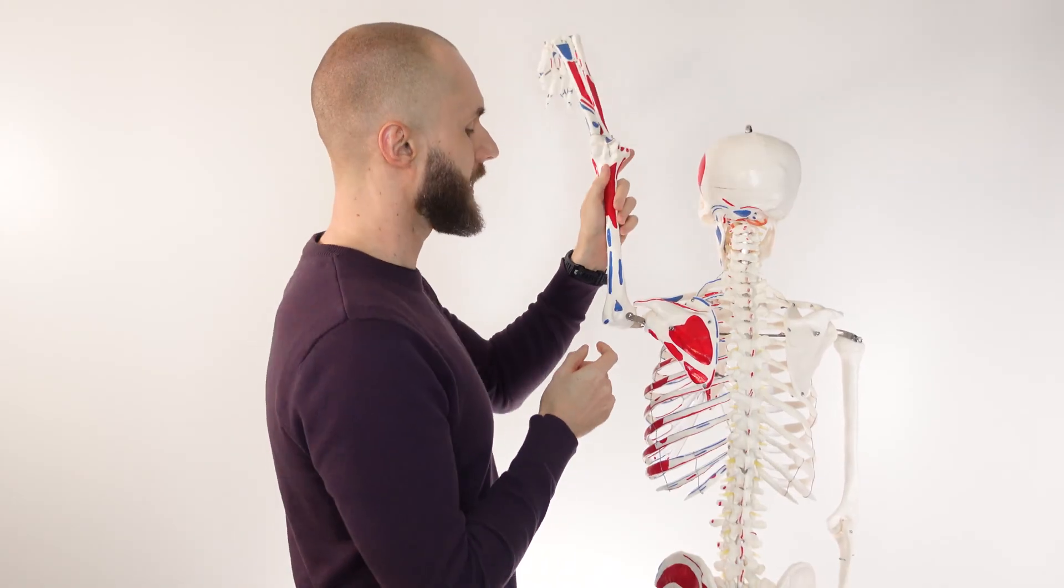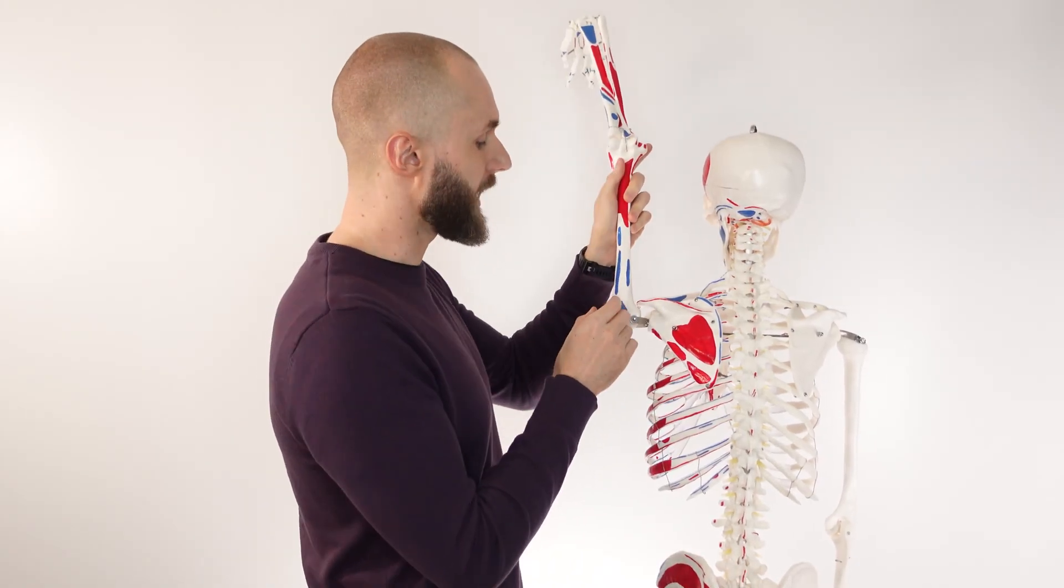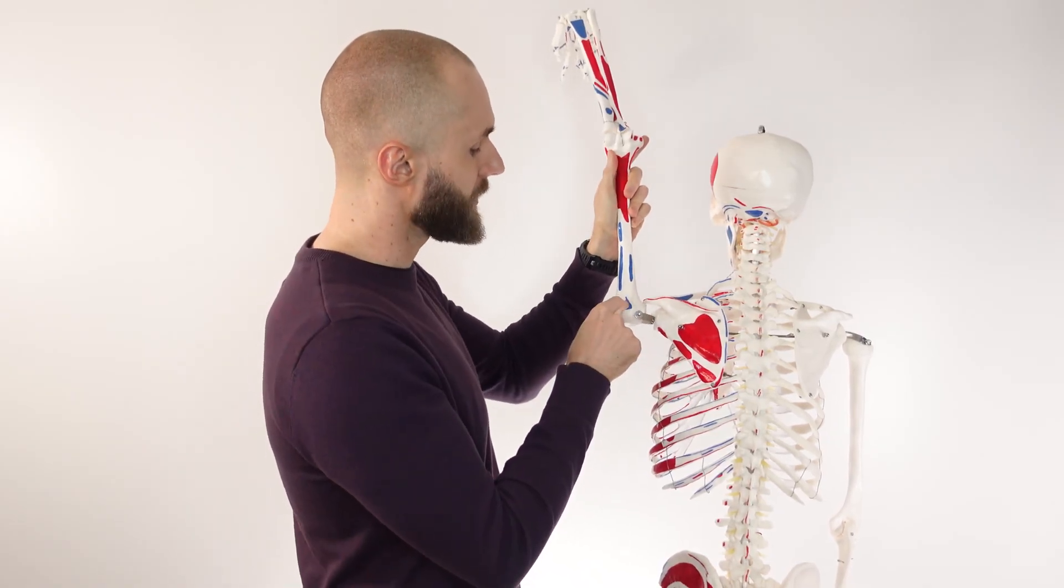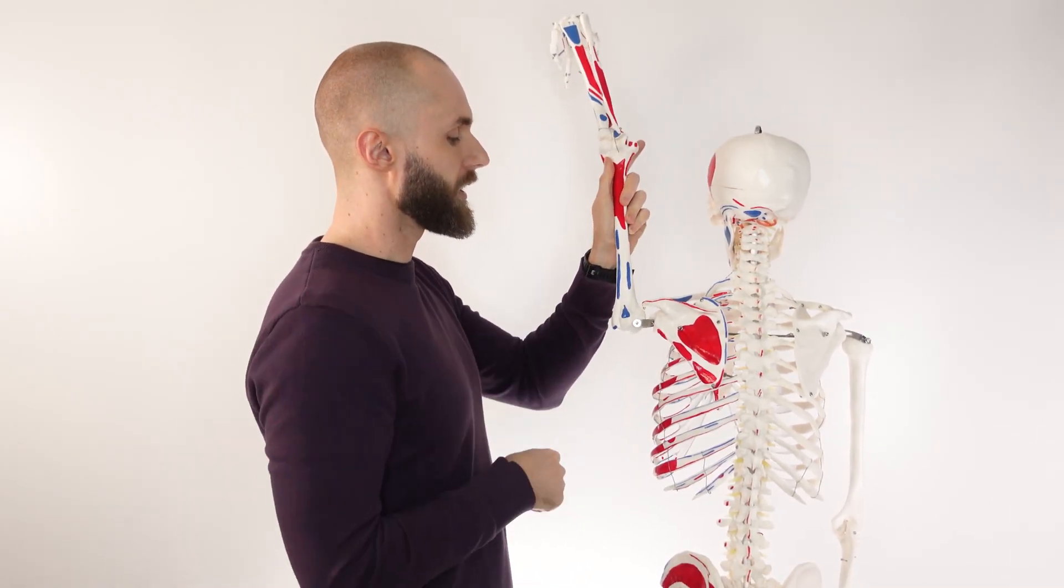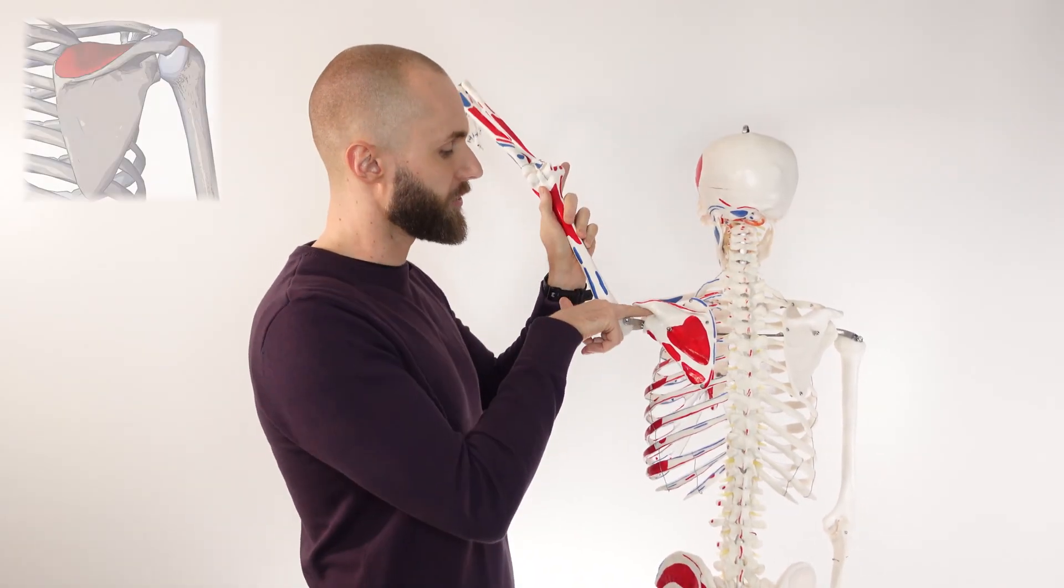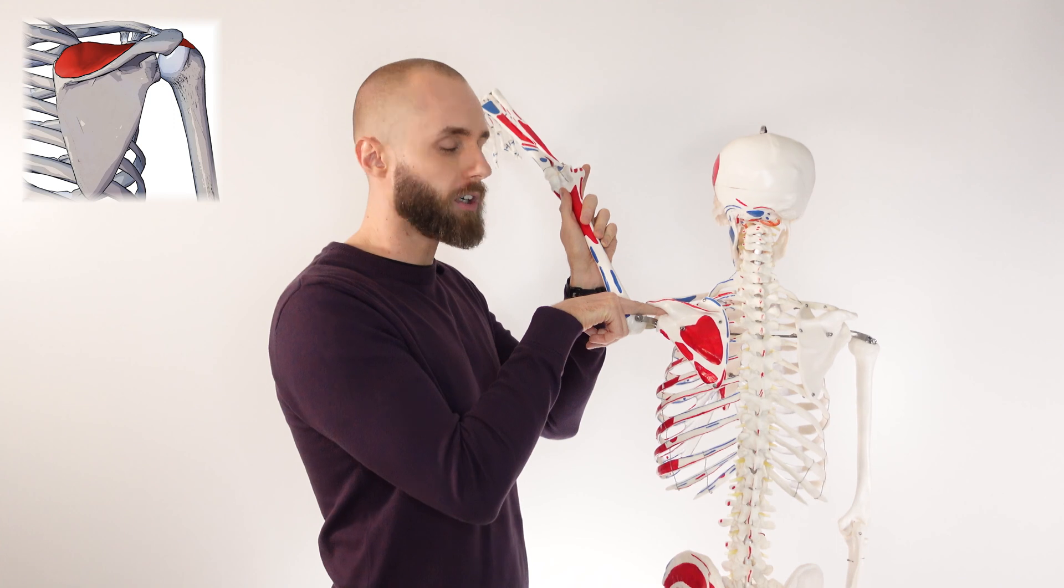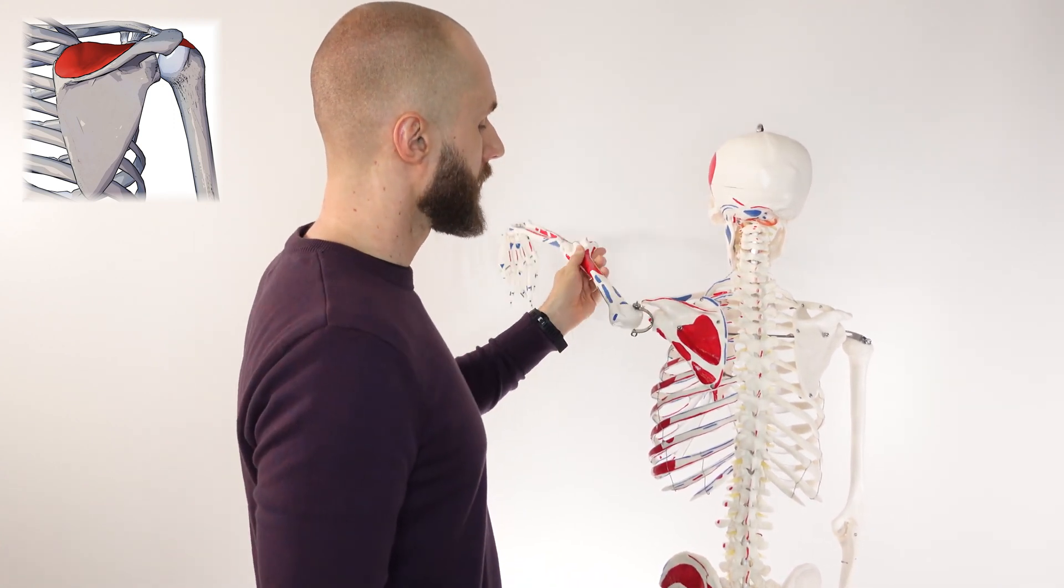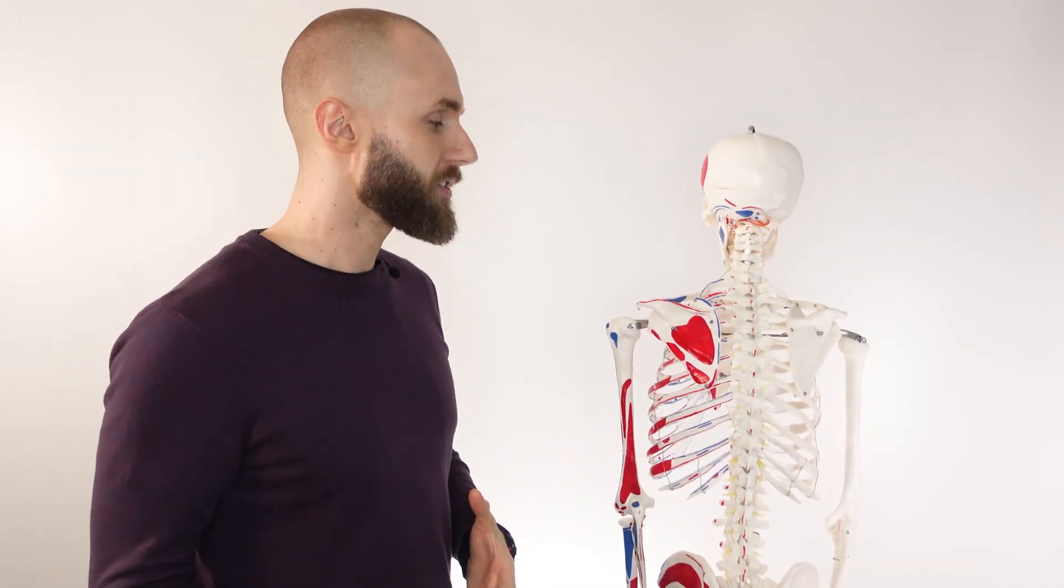The importance of that is because when the arm's up overhead, right now you can see we haven't had that rotation of the scapula and you can see the acromion right here. The humerus is able to bump into it. We've also got the supraspinatus passing under this gap in the acromion here and then that could get pinched. So people who have dysfunction or weakness in the serratus anterior tend to have pain when lifting their arm up overhead or pressing overhead.